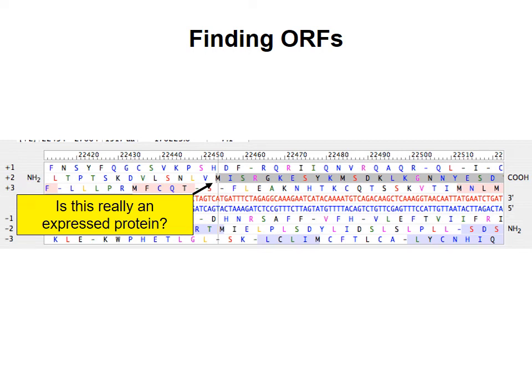In the last video about genome annotation, I finished with this question: how can we determine whether an ATG in a genome sequence is really the start codon for an open reading frame that expresses a protein? In this video, I'll talk about different pieces of evidence we can look for to identify open reading frames in a newly sequenced genome.